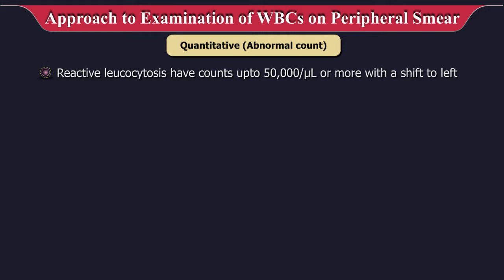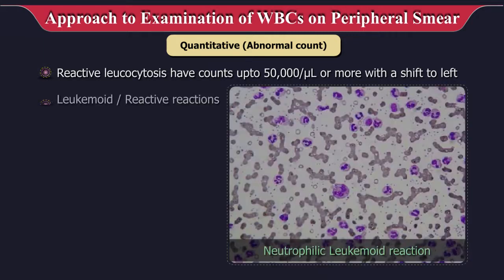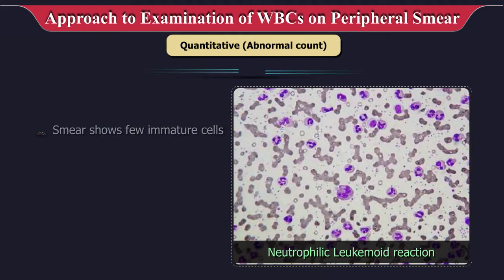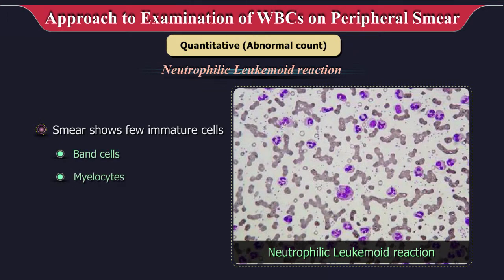Reactive leukocytosis may have counts up to 50,000 per microliter or more with a shift to the left. Leukemoid reactions can be neutrophilic, eosinophilic, lymphocytic, or monocytic. The smear may show few immature cells like band cells, myelocytes, and metamyelocytes, but there will be no blast cells.